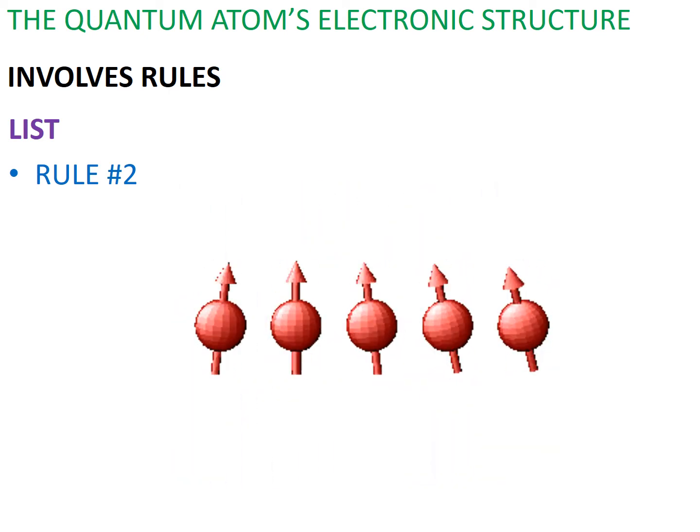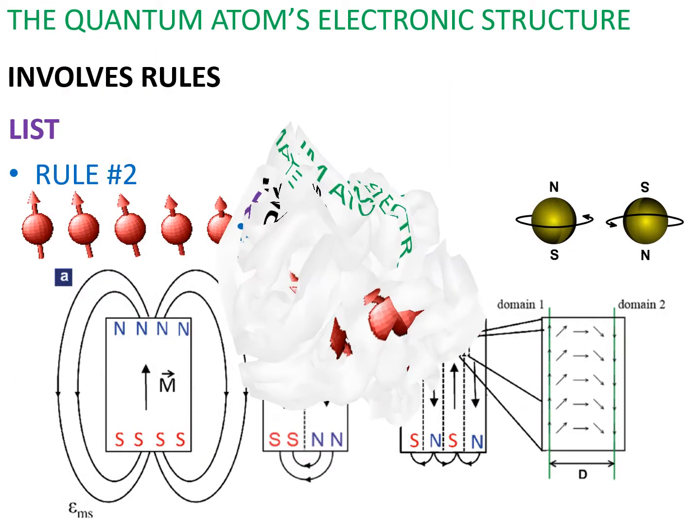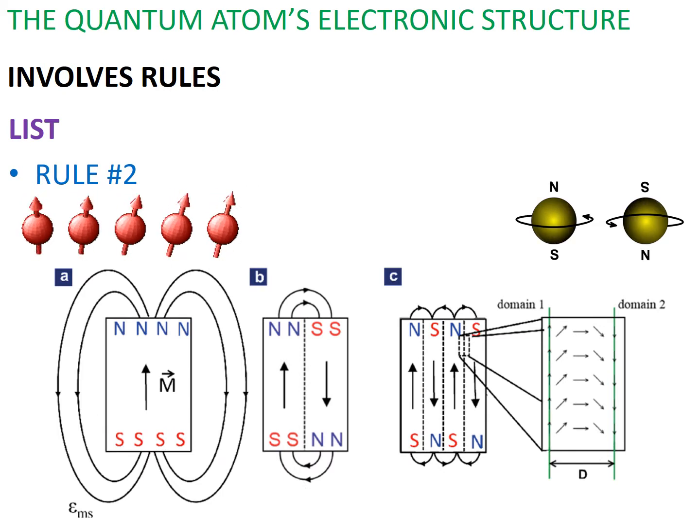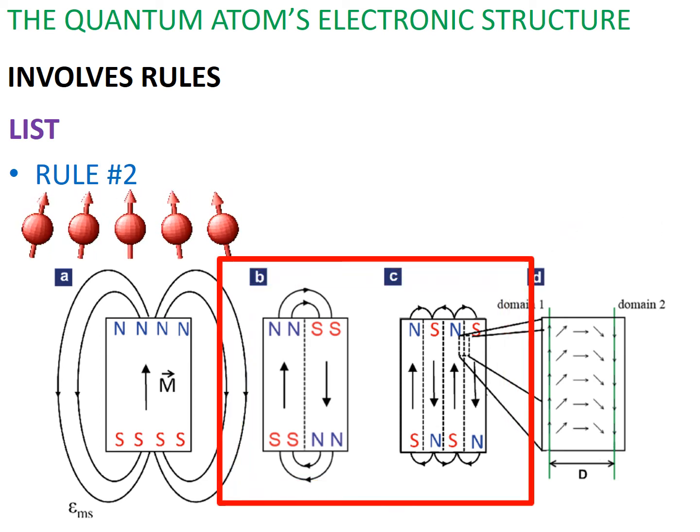Two electrons next to each other, spinning in the same direction, will produce two magnetic fields that oppose each other, and thus maximize electrostatic and magnetic repulsion within the atom. The pairing up of two electrons spinning in opposite directions also prevents the atom itself from having a net magnetic field.